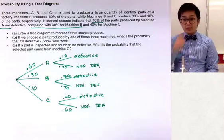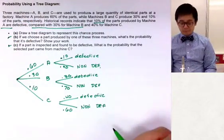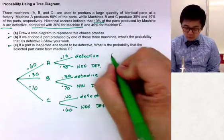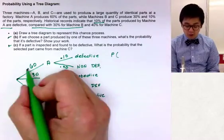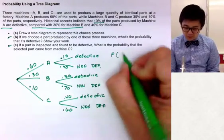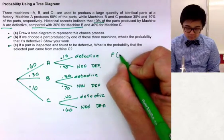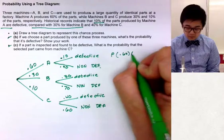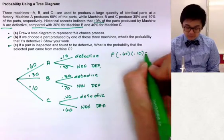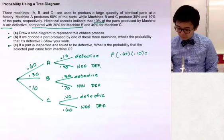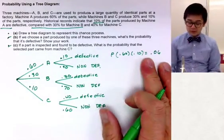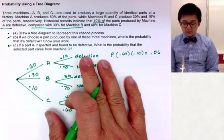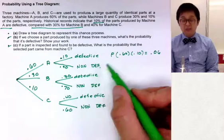The probability that a selected part is defective and came from machine A is simply 0.60 × 0.10 = 0.06, or 6%. This represents the probability that a defective part comes from machine A.